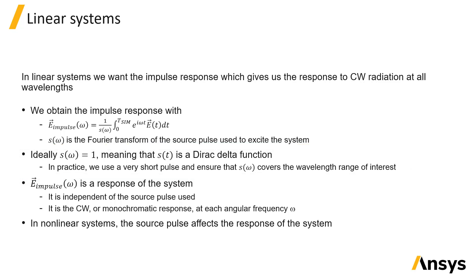It is worth noting that with this normalization we are calculating the impulse response of the system, which is independent of the source pulse used. This means that if we change the source pulse, for example by making it twice as long, we will get exactly the same impulse response. It corresponds to the CW or monochromatic response at each frequency or wavelength, and this is typically the result we want for a linear system.